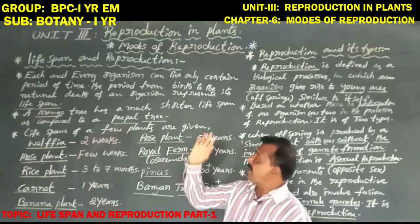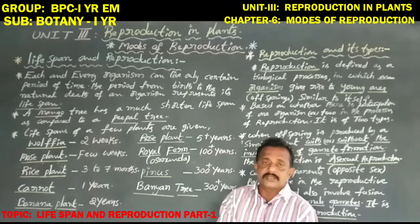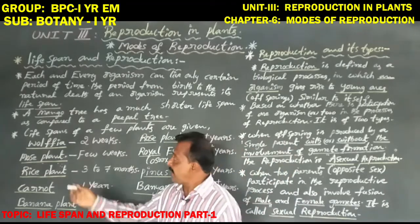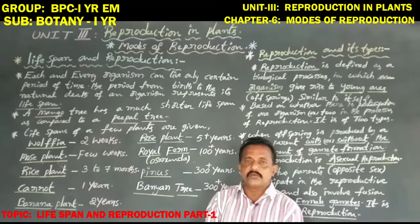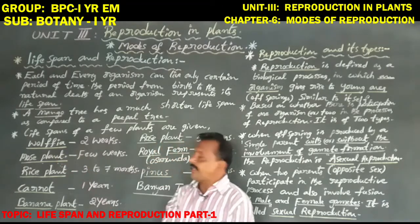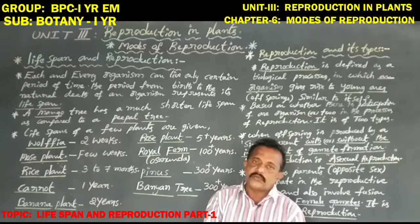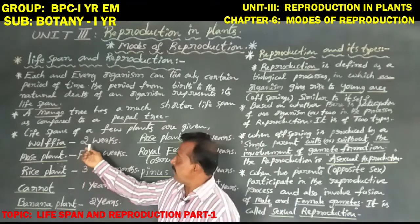Life spans of a few plants are given. The first plant is Wolffia, also known as Lemna — this is the smallest plant among angiosperms. Wolffia has a life span of two weeks.